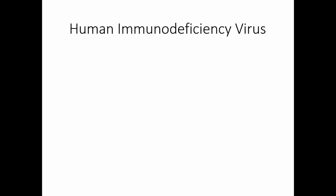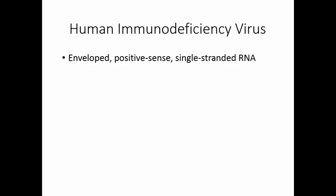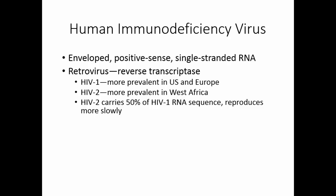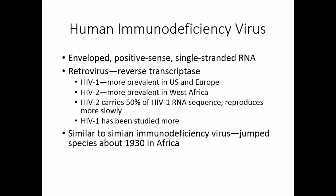The human immunodeficiency virus is the causative agent. This is an envelope virus with positive-sense single-stranded RNA. It is a retrovirus because it contains an enzyme called reverse transcriptase. HIV-1 is more prevalent in the United States and Europe, and HIV-2 is more prevalent in West Africa. HIV-2 has about 50% of the RNA sequencing of HIV-1, but it reproduces more slowly so the disease progresses more slowly. HIV is very similar to SIV, simian immunodeficiency virus. It appears that this virus jumped species about 1930 in Africa, going from monkeys to humans.